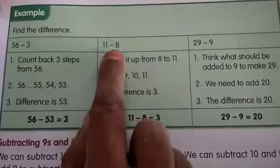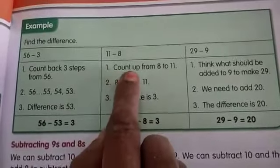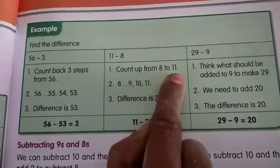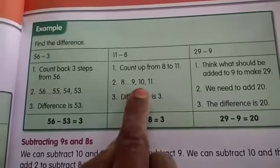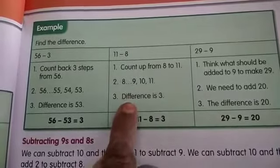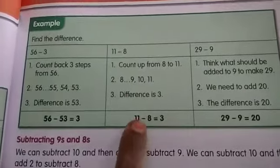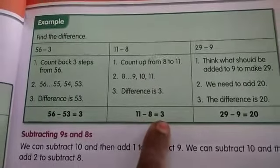One more. 11 minus 8. So count up from 8 to 11. So he is counting up to 8 to 11. 8, 9, 10, 11. So difference is also here 3 children. So 11 minus 8 is 3.